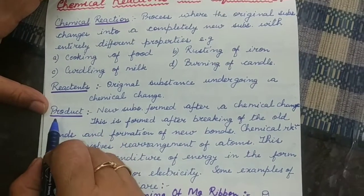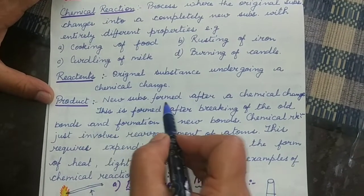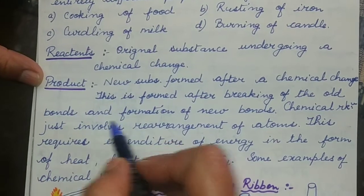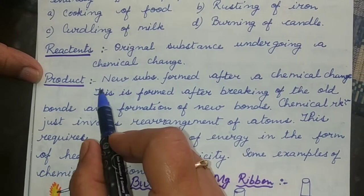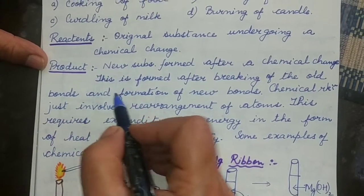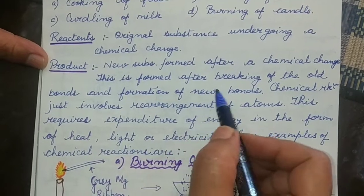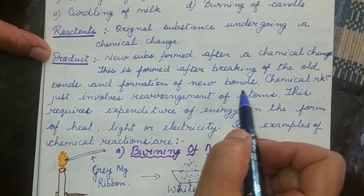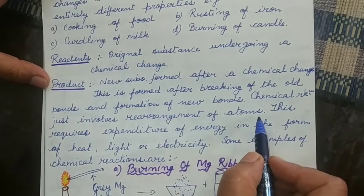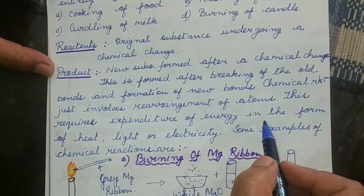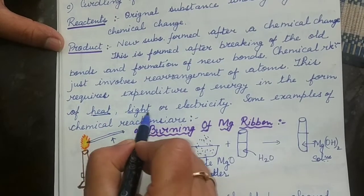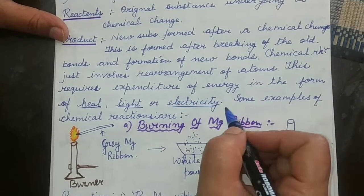Next is product. A product is the new substance formed after a chemical change. It is formed after breaking of the old bonds and formation of new bonds, so a completely new substance has been formed. The reactant undergoes rearrangement of atoms — old bonds are broken and new bonds are formed — and the reactant is transformed into the product. Chemical reaction just involves rearrangement of atoms, and this requires expenditure of energy which can be in the form of heat, light, or electricity.